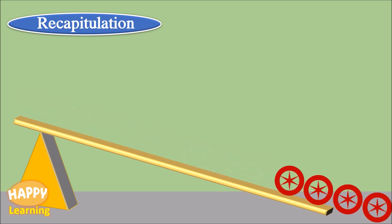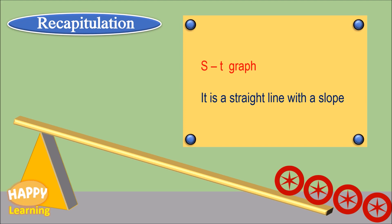Point 4. S versus t graph. It is a straight line with a slope. In our experiment for the three slopes m1 m2 m3 we got positive slopes.